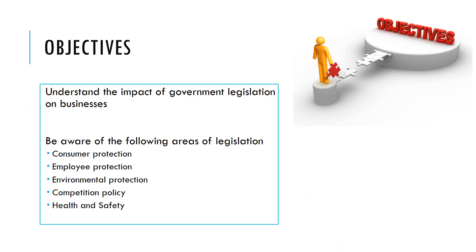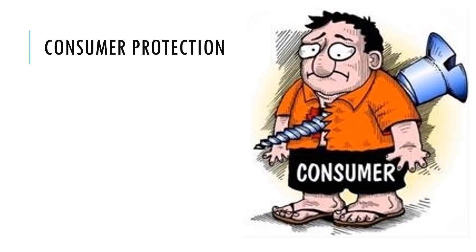In this video we're going to look at the impacts of laws made by governments on businesses, and we're going to look at five different types of law. Let's start off with consumer protection law.